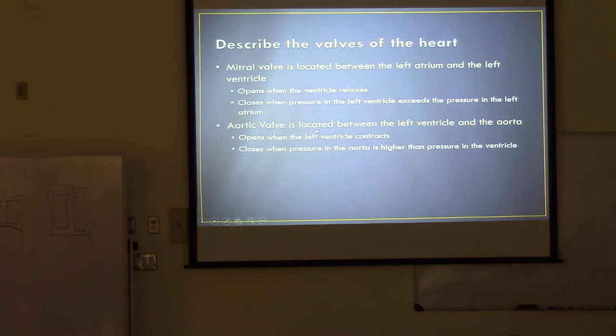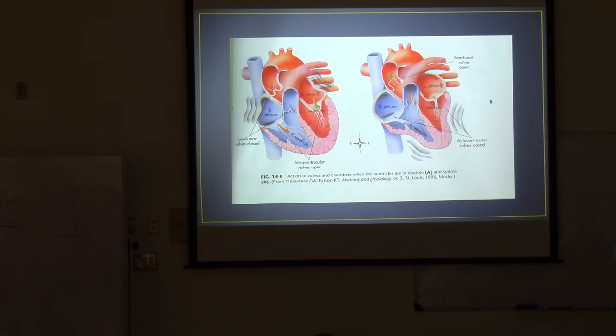Next is the aortic valve, located between the left ventricle and the aorta. It opens when the left ventricle contracts and closes when the pressure in the aorta is higher than the pressure in the ventricle. When the mitral valve is open, blood enters the left ventricle. When the heart contracts, it pushes the mitral valve closed, the aortic valve opens, and blood is delivered to the aorta.